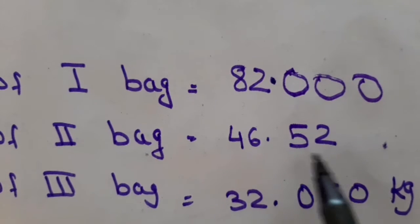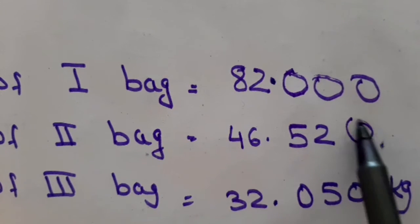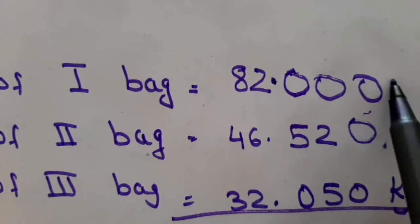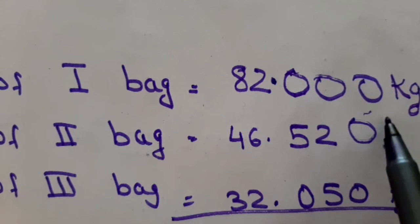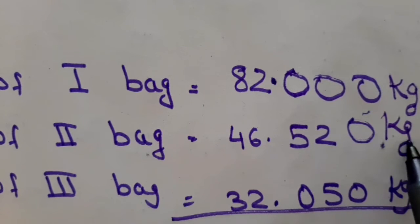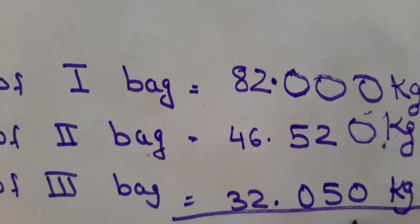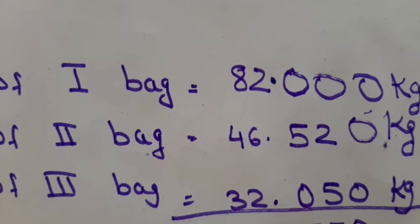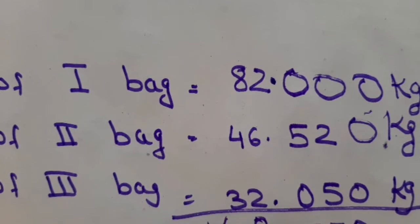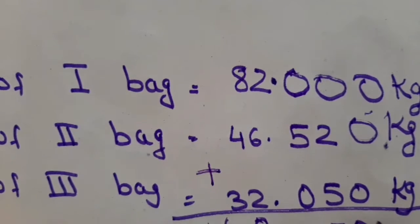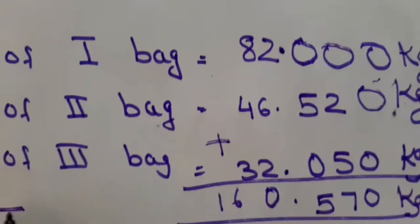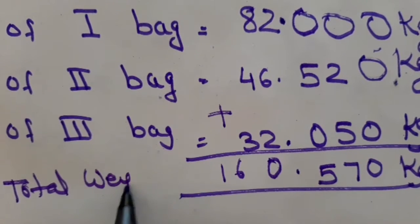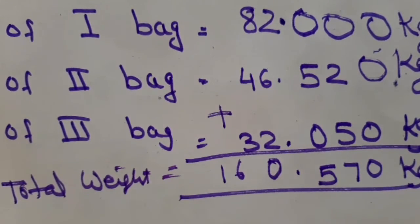For 46.52, there are only 2 digits after the decimal, so you will add one zero to make it 46.520. Now the weights are: first bag 82.000 kg, second bag 46.520 kg, third bag 32.050 kg. Adding them, the total weight becomes 160.570 kg.